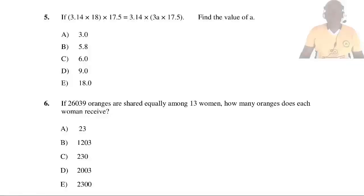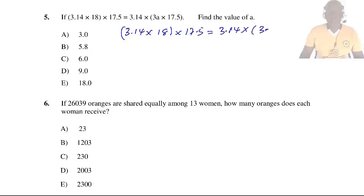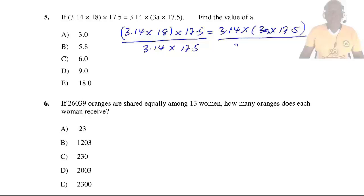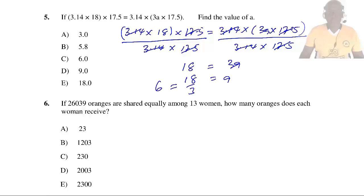Question 5: If 3.14 × 18 × 17.5 = 3.14 × 3a × 17.5, find the value of a. Dividing both sides by 3.14 × 17.5, these cancel out, leaving 3a = 18. Therefore a = 18 ÷ 3 = 6. So the answer is 6.